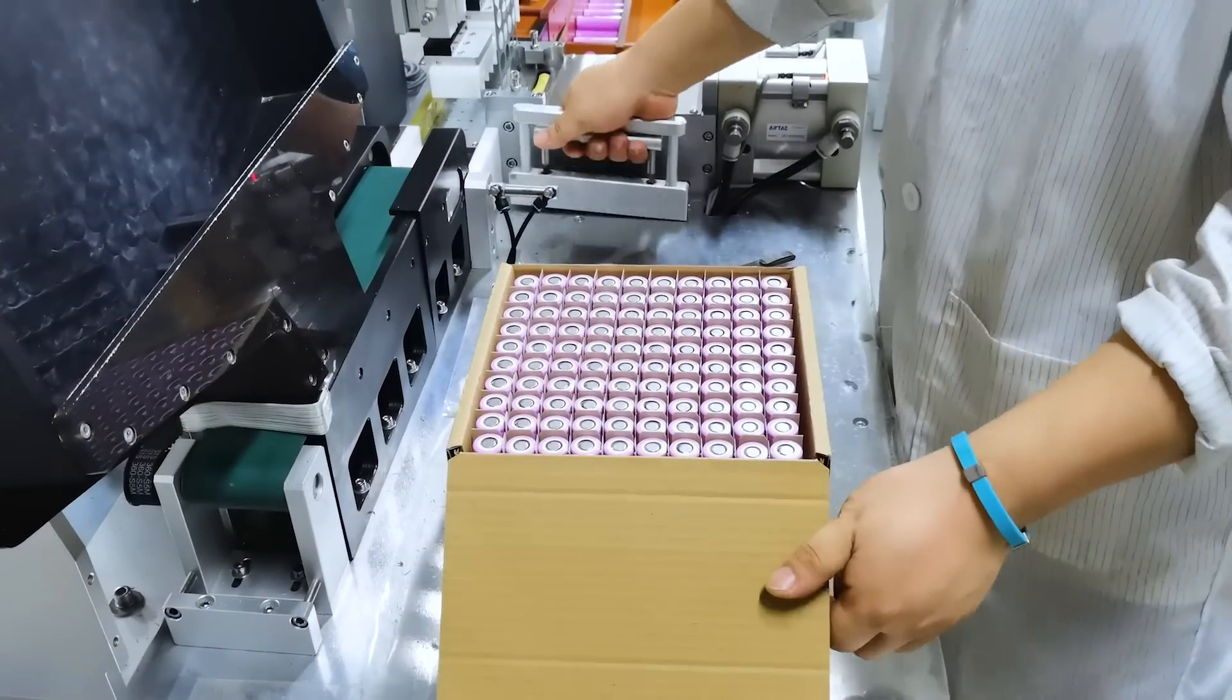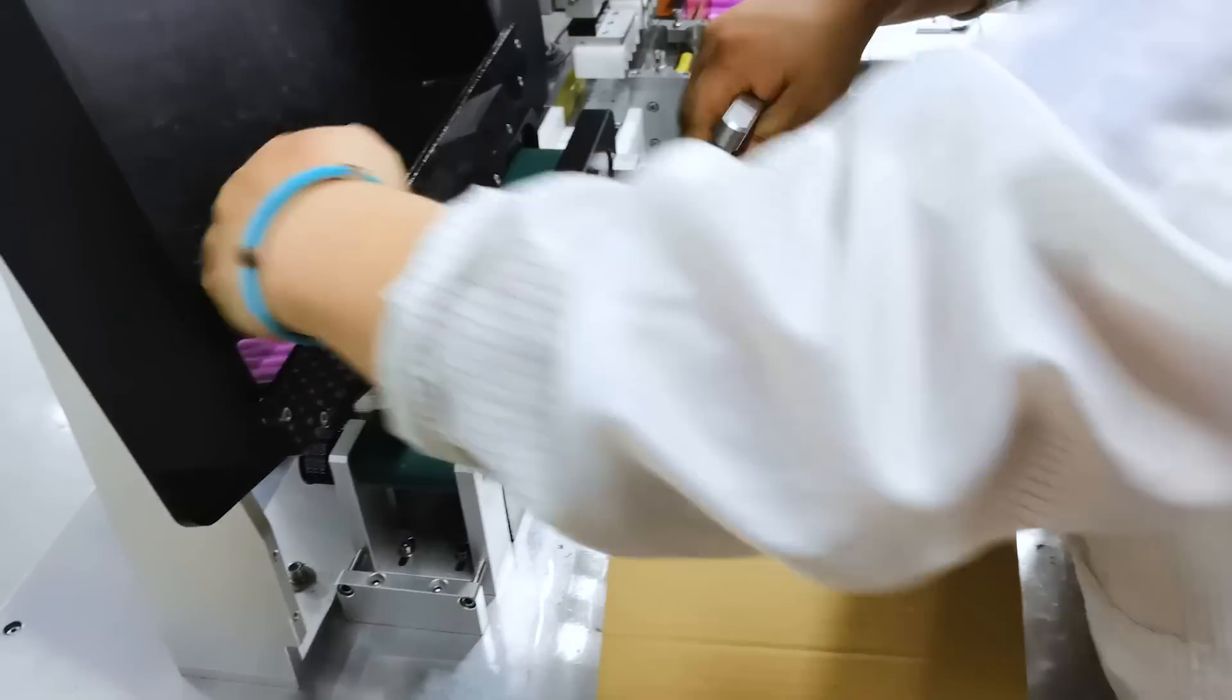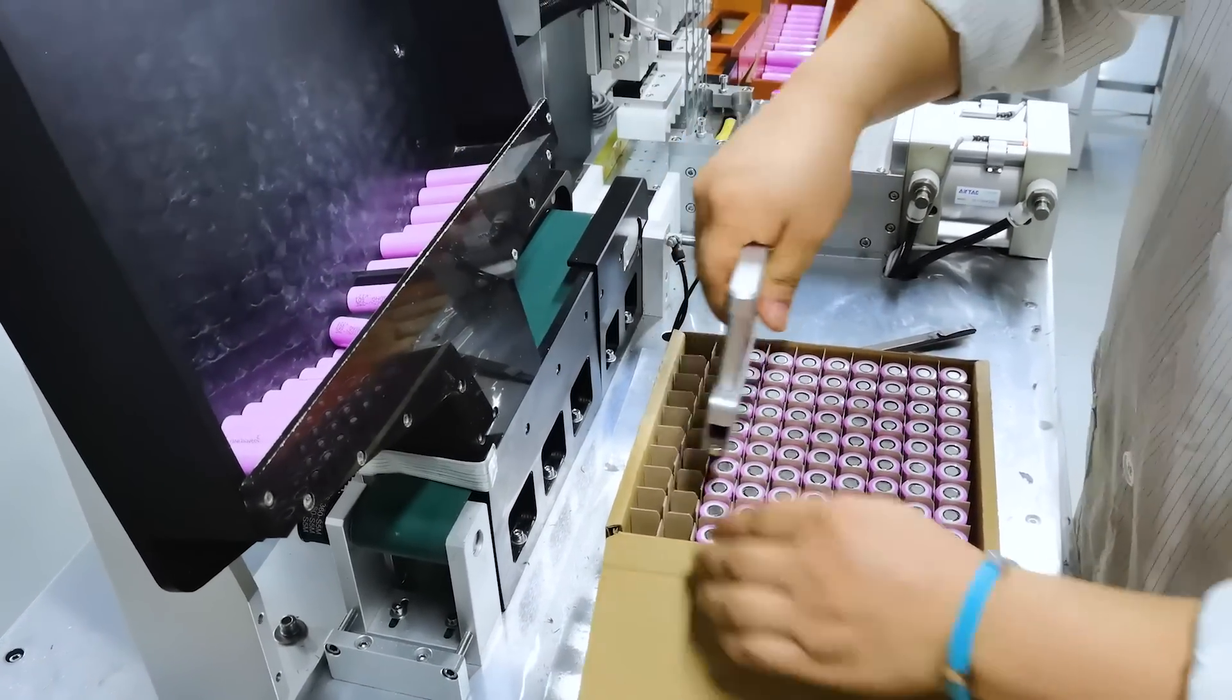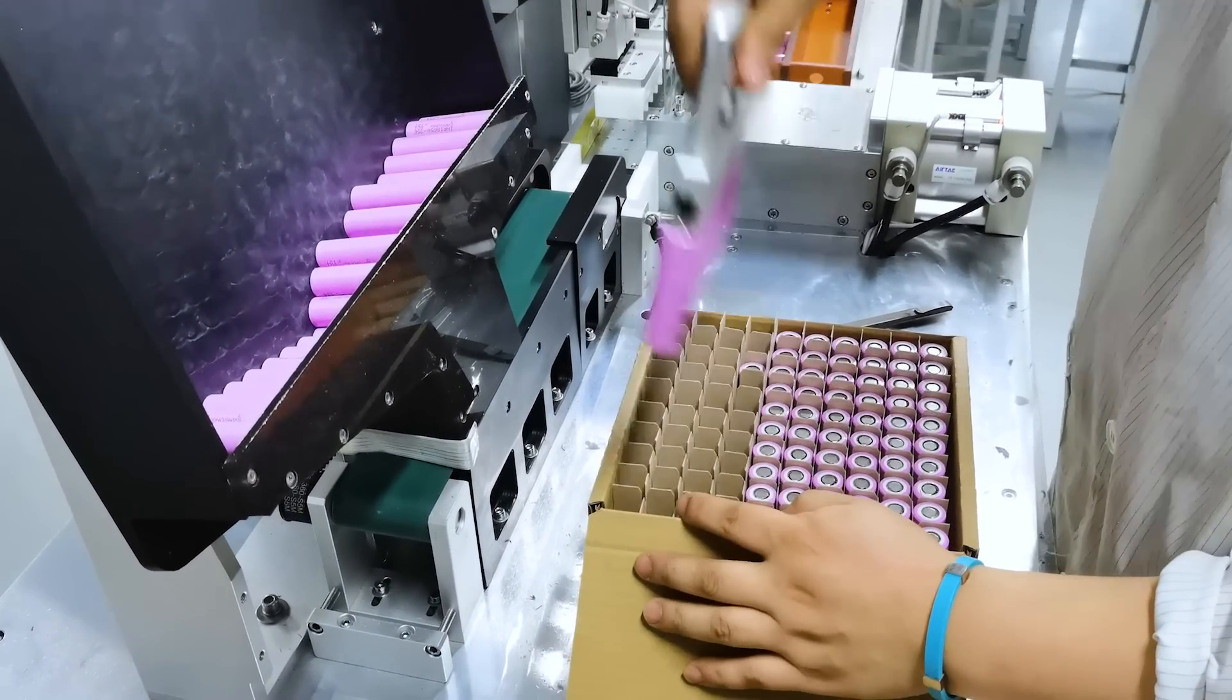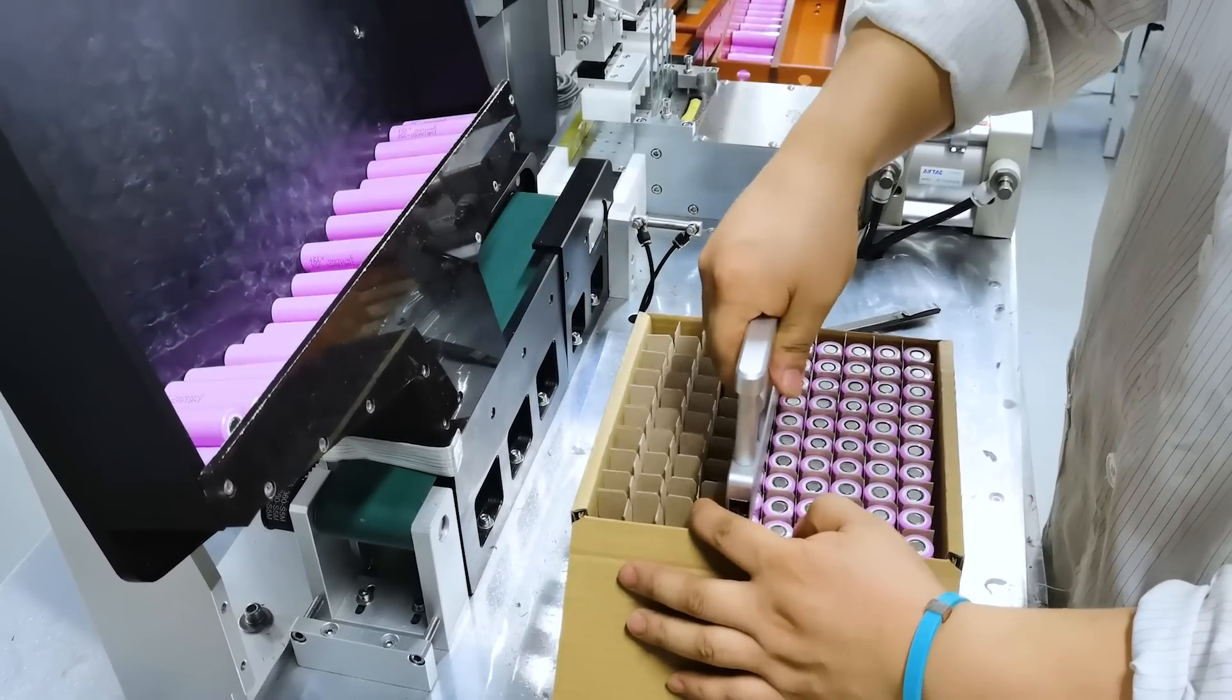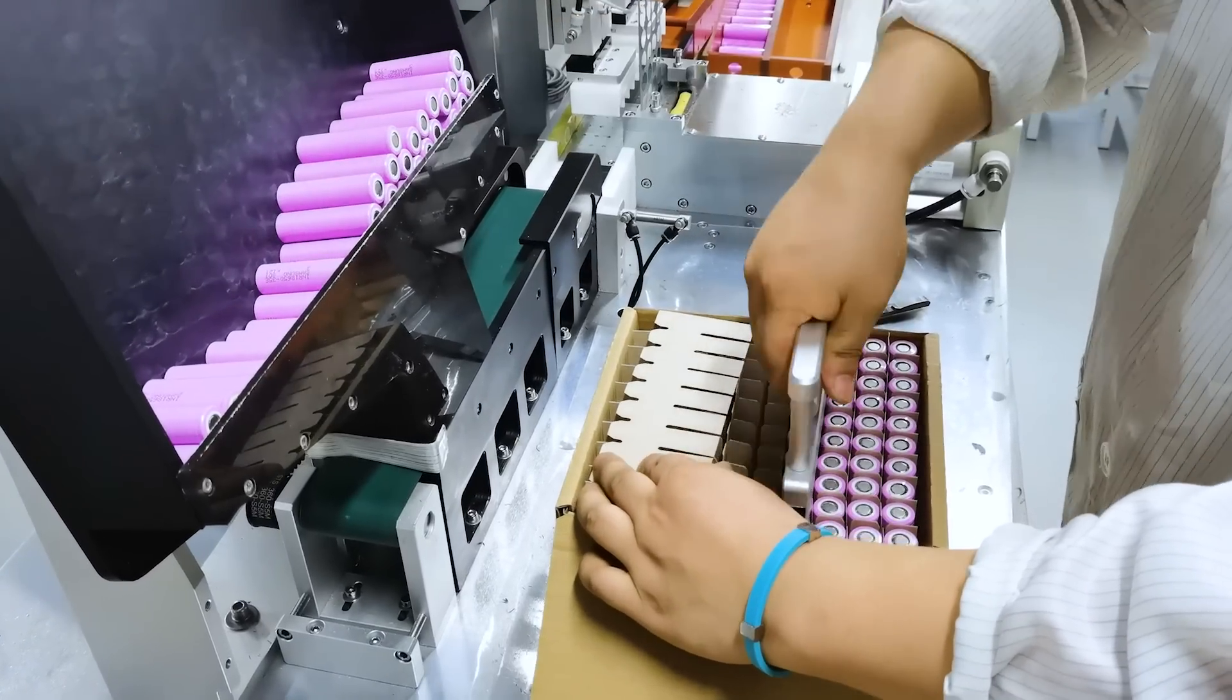The very first thing that happens here is we get all these cells in a box and take them out, load them into this really cool sorting and testing machine. The batteries go through the testing machine.